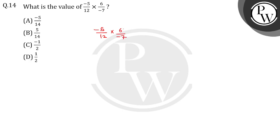Let's check if it is divisible. 6 and 12: minus 5 upon 2 multiplied by minus 7. Simplifying: minus 5 upon minus 14 — the two negatives cancel out, giving us 5 upon 14.